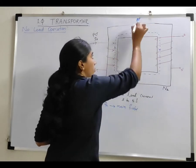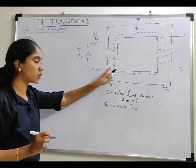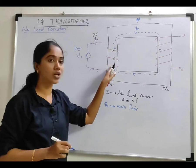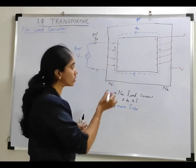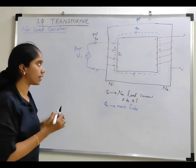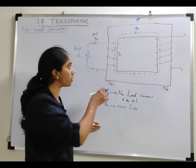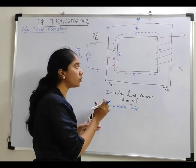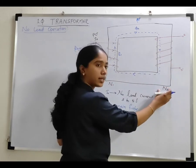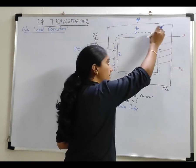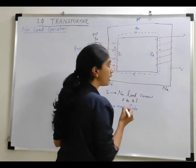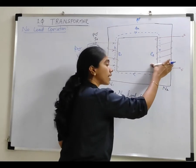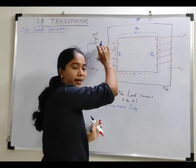This flux is also continuously varying with respect to time. The conductors experience a rate of change of flux, and according to Faraday's law of electromagnetic induction, an EMF will get induced in the primary side — that is E1. E1 is the self-induced EMF because it is induced in the primary due to the change of its own current. The secondary winding, which has N2 number of turns, is also experiencing a rate of change of magnetic flux, so an EMF E2 will get induced in the secondary side as well. This E2 is called the mutually induced EMF because it is induced in the secondary winding due to the change of flux produced by the current in the primary winding.